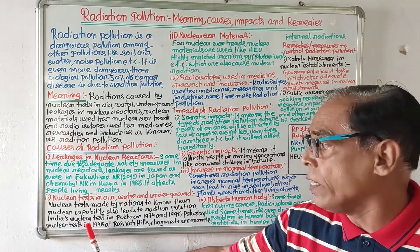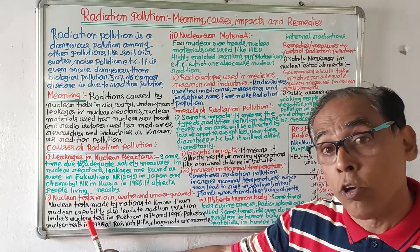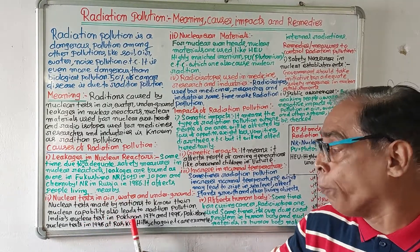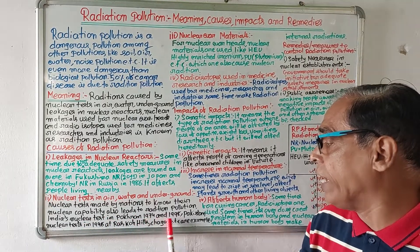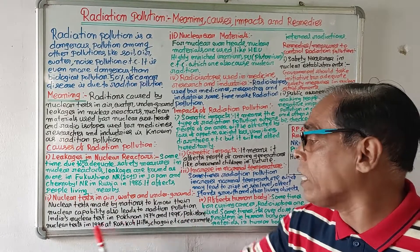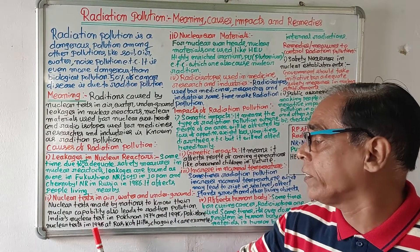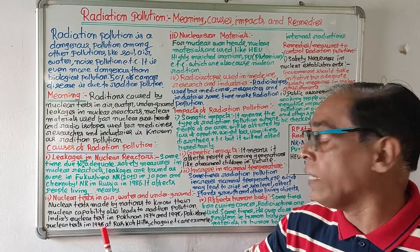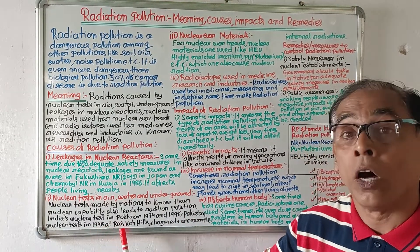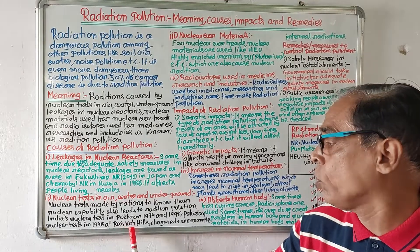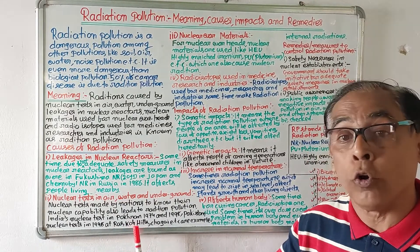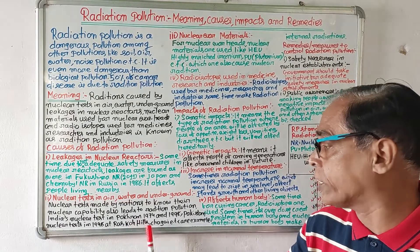In the past, India's nuclear test in Pokhran in 1974 and 1998, and Pakistan's nuclear test in 1998 are examples of nuclear tests that contributed to radiation pollution.